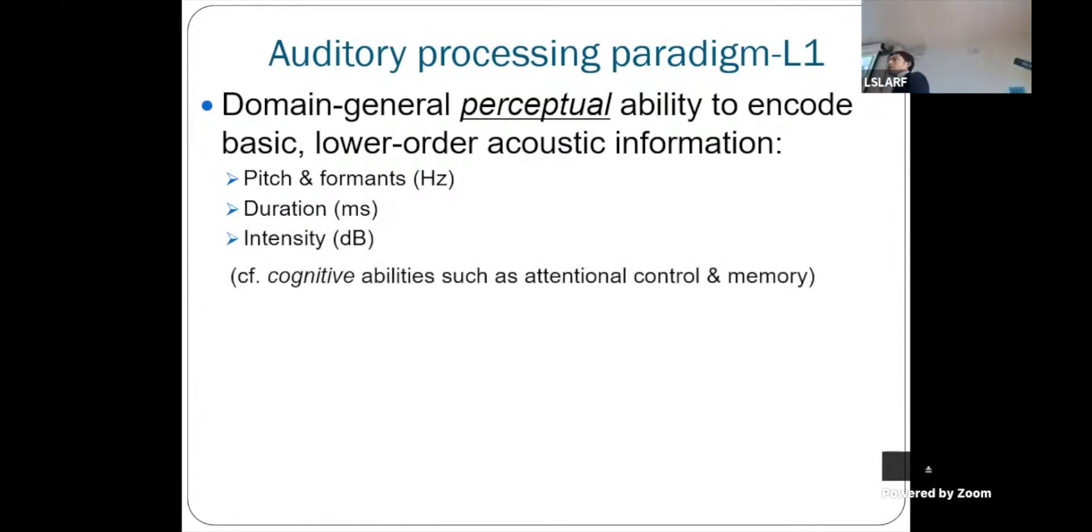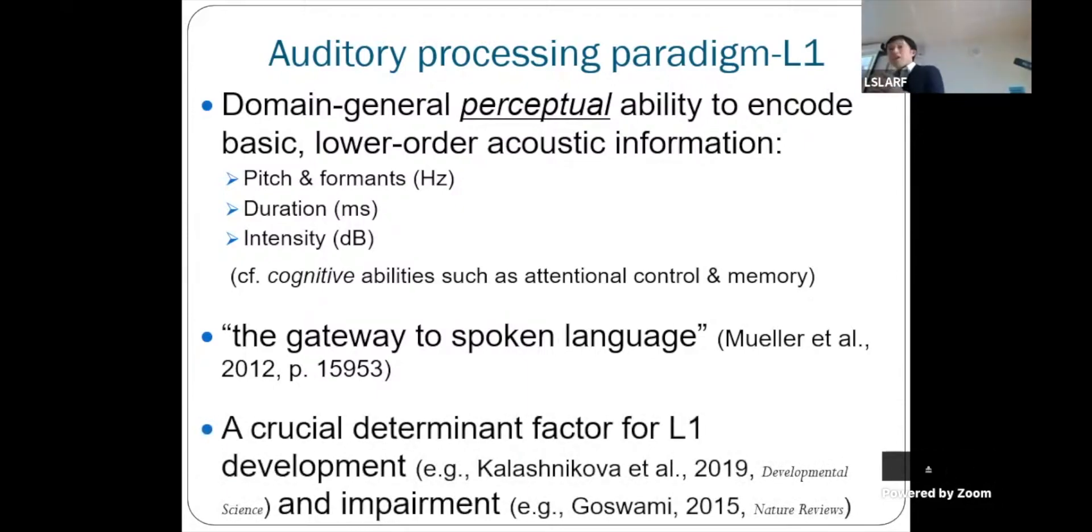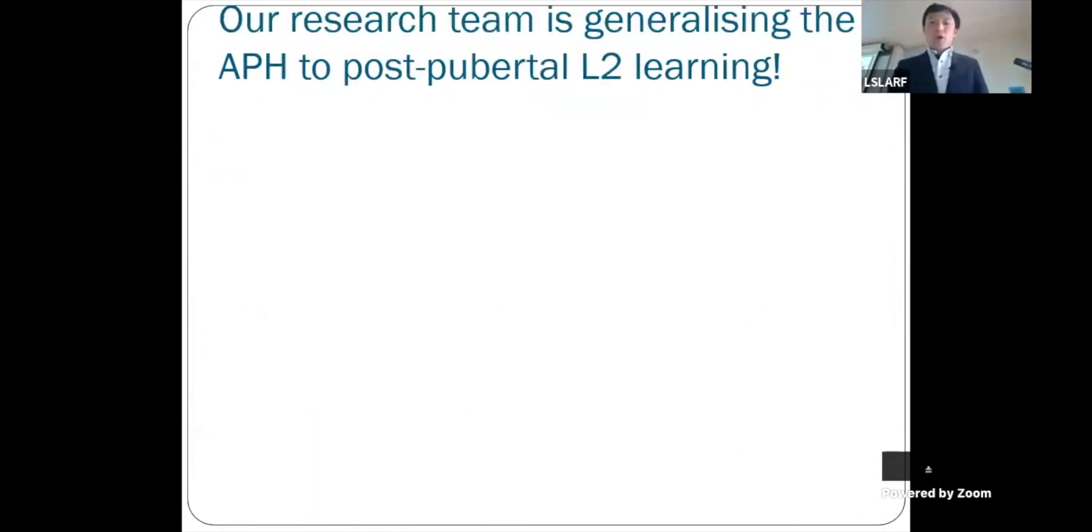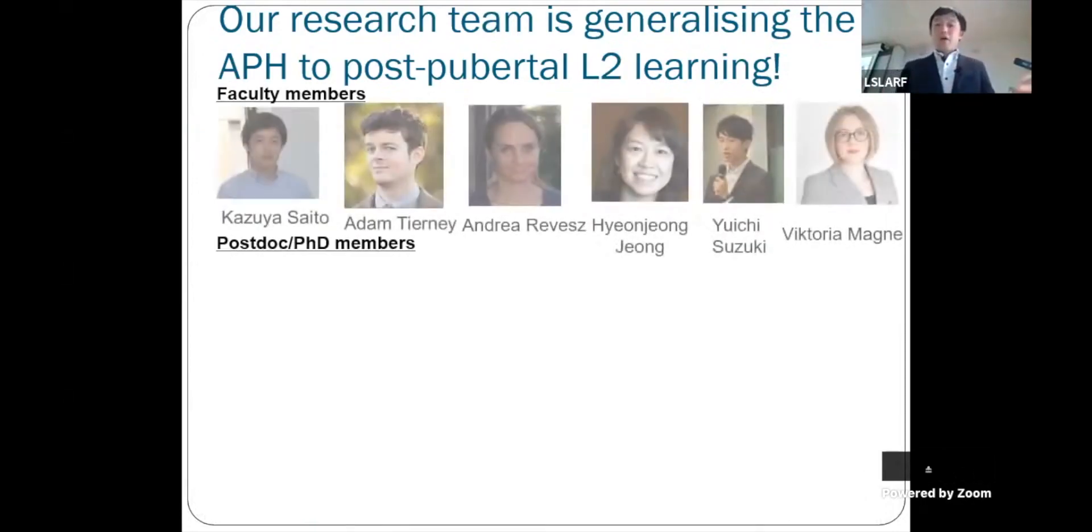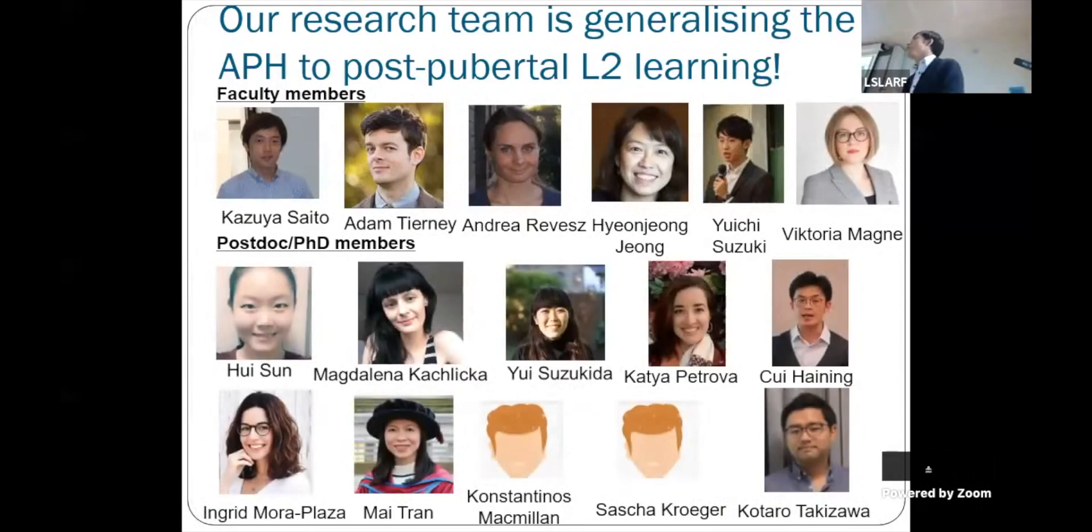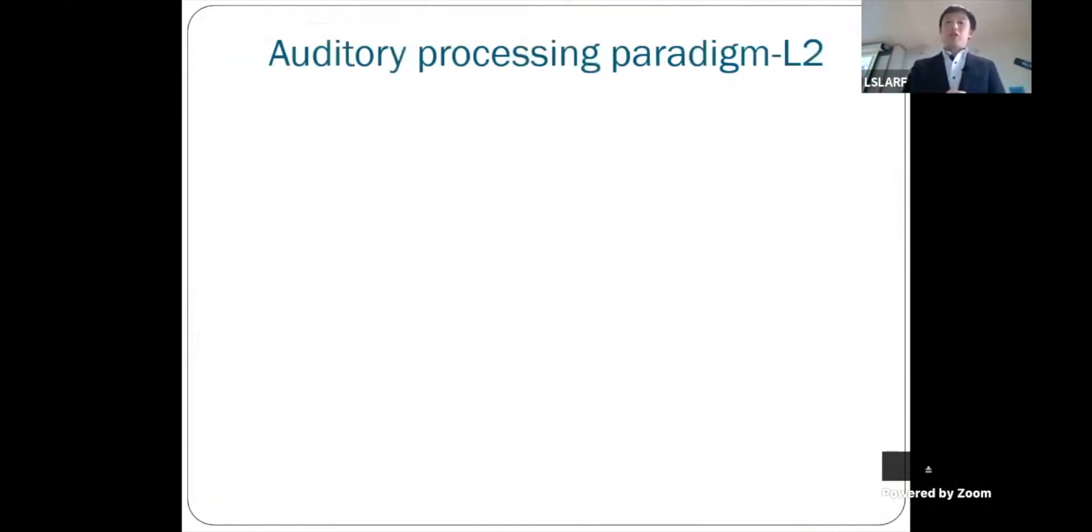Because this skill is different from relatively higher order cognitive skills such as attention, control, and memory, and because this is the first skill that you need when you encounter oral language input, any individual variation at this stage is strongly associated with the speed of first language acquisition and also the incidence of language impairment. In cognitive psychology and psycholinguistics, this topic has been researched a lot. Therefore, I formed a research team comprising faculty members as well as postdoc and PhD students, and we try to generalize this framework to the context of adult second language speech learning.